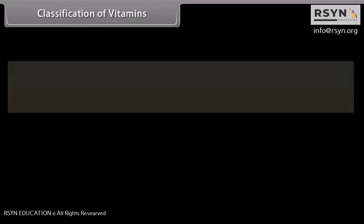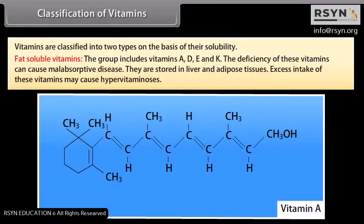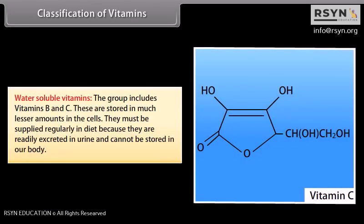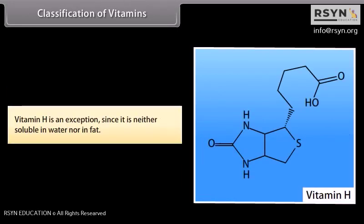Vitamins are classified into two types on the basis of their solubility. Fat-soluble vitamins include A, D, E, and K. Deficiency of these vitamins can cause malabsorptive disease; they are stored in liver and adipose tissues, and excess intake may cause hypervitaminosis. Water-soluble vitamins include B and C; they are stored in lesser amounts in cells and must be supplied regularly in diet as they are excreted in urine. Vitamin H is an exception since it is neither soluble in water nor in fat.